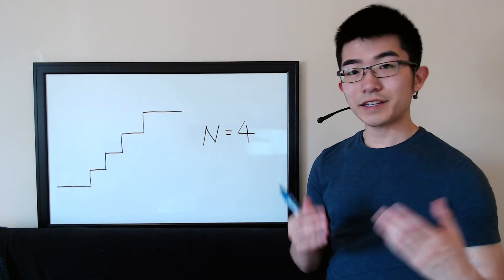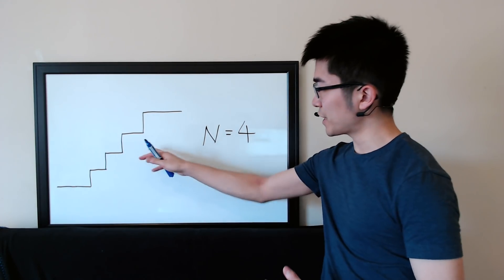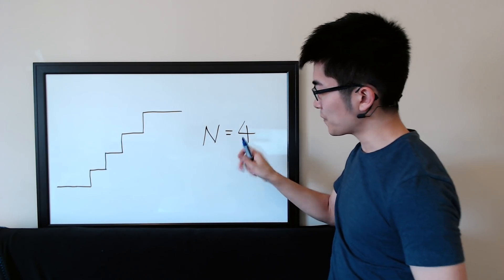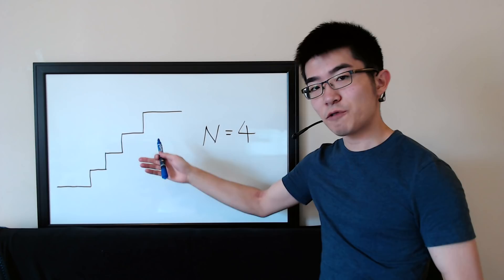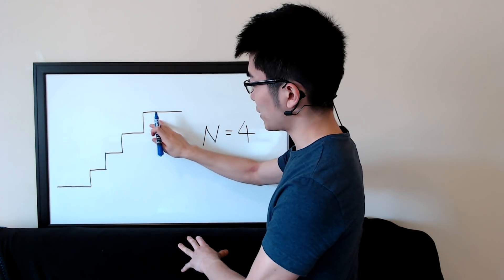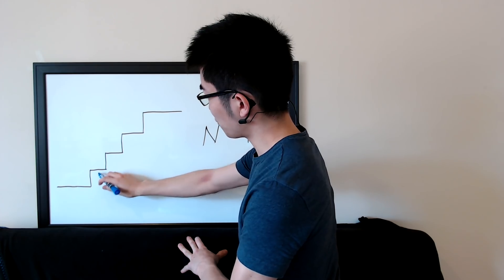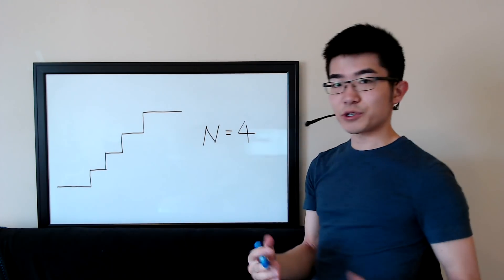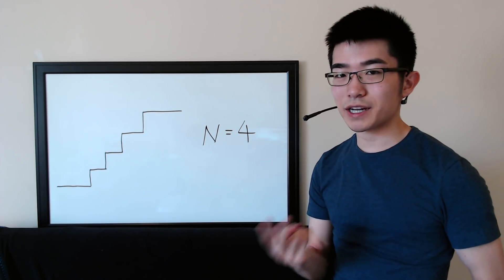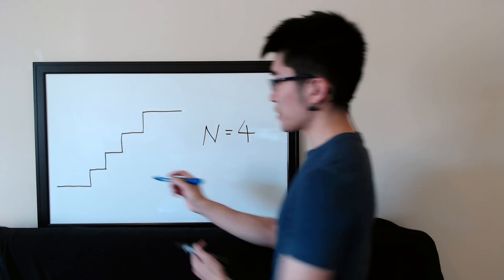Hey everyone, today I have a coding interview question that's being asked by Amazon among other companies. In this problem, you're given a staircase with n steps. So if the given n is 4, your staircase will have 4 steps, meaning you can go from the bottom to the top in 4 steps. Suppose that you can only take one or two steps at a time, starting from the bottom.